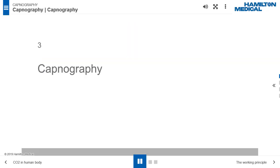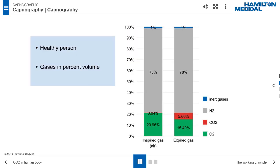Capnography. The air is a mixture of nitrogen, oxygen, carbon dioxide and inert gases. The two bars show these components in percent volume in the air and in normal expiratory gas. The clear differences are O2, 21% versus 15%, and CO2, almost 0% versus 6%. Nitrogen and inert gases are unchanged.